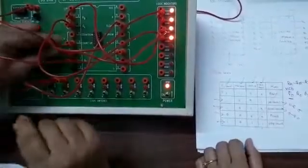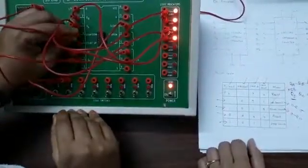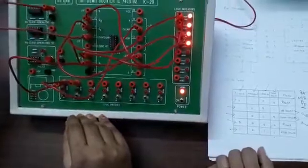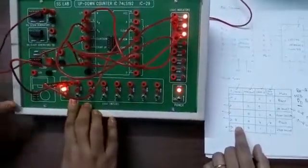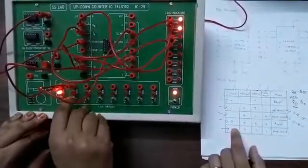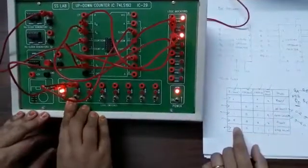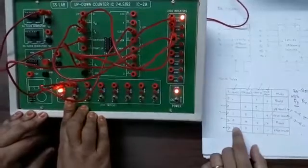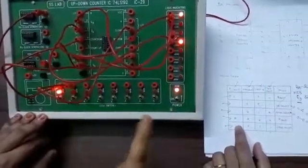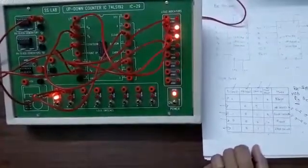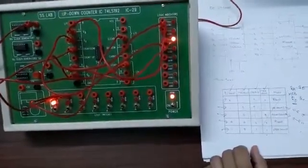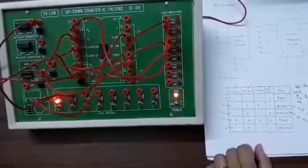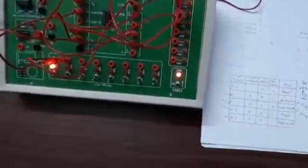For down count, you connect the wire to the count down input. After clearing, you can see: nine, eight, seven, six, five, four, three, two, one, zero. Again it starts from nine to zero, repeating the cycle.